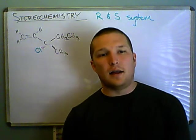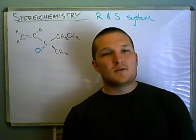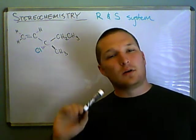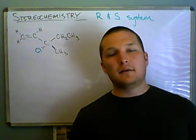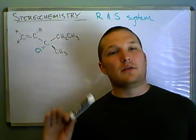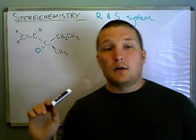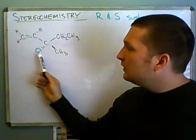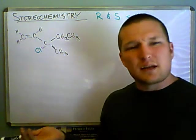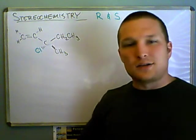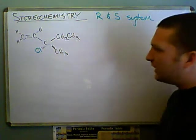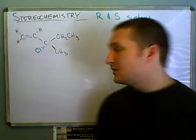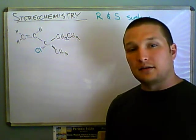I want to find out whether or not this molecule is R or S. I'm not going to worry about naming the full molecule right now, but I just want to find out whether it's R or S. Right here, that's chlorine — I only drew that in green just to show that it's chlorine because it might look like a CH or whatever. So the first thing I need to do is identify the chirality center.